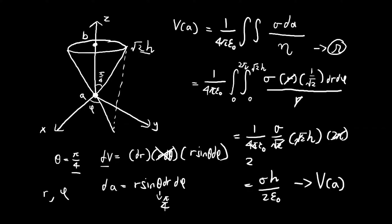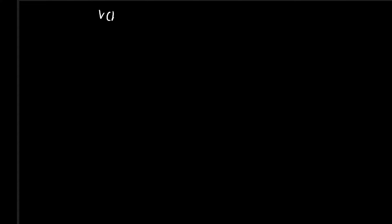Continuing where we left off, now we want to find the potential at point B, V_B. We can use the same formula, but this time the integral is going to be a lot trickier because things are going to get a lot uglier.